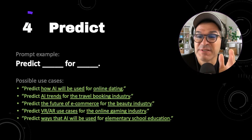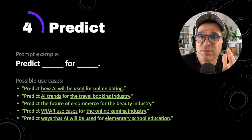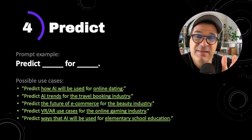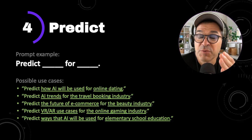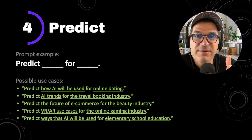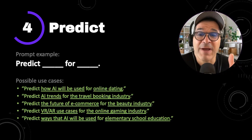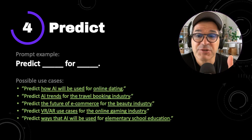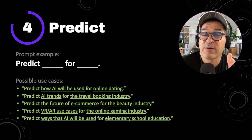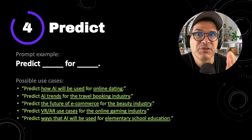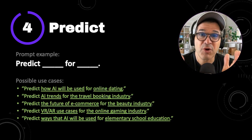This fourth ChatGPT prompt is a fun one: predict. Did you know that ChatGPT can see the future? Not really, but it's fun seeing some of the predictions it makes. The example here is predict blank for blank — predict trend for industry. Insert your own topic and industry and see what ChatGPT predicts. Some use cases: predict how AI will be used for online dating, predict AI trends for the travel industry, or predict ways that AI will be used for elementary school education. Try this prompt for your own industry and see if you agree with the predictions.